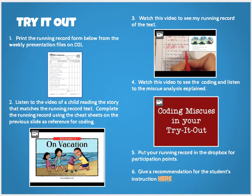Then you're going to have a try it out activity. Go into D2L and get the running record form from the weekly presentation files — it's very important that you get this form. Then listen to the video of a child reading a story called On Vacation. Grab those cheat sheets from the prior slide and mark a running record for this child, pretending she is a student in your classroom. Then watch the video at step three to see how I completed my running record of this text, followed by a video on how to code the activity, looking at mistakes the student made and coding them for meaning, structure, and vision.